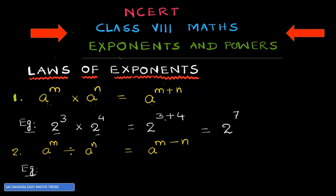Example for Law 2: 2 raised to the power of 4 divided by 2 raised to the power of 3. The bases are same, so we keep the single base 2. Then we subtract the exponents: 4 minus 3 equals 1. So the result is 2 raised to the power of 1, which is simply 2.